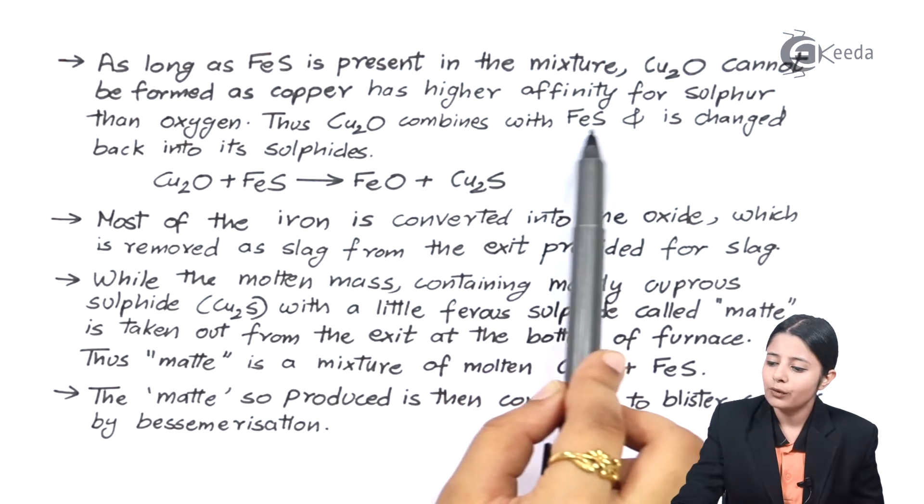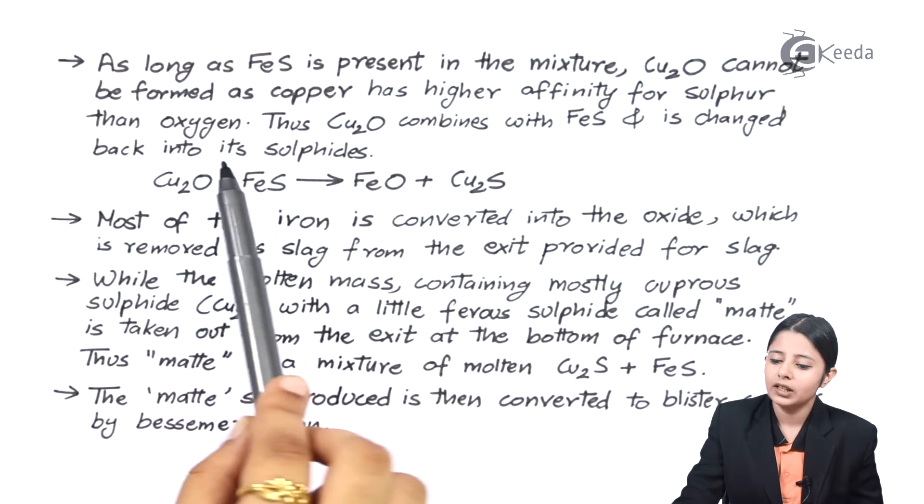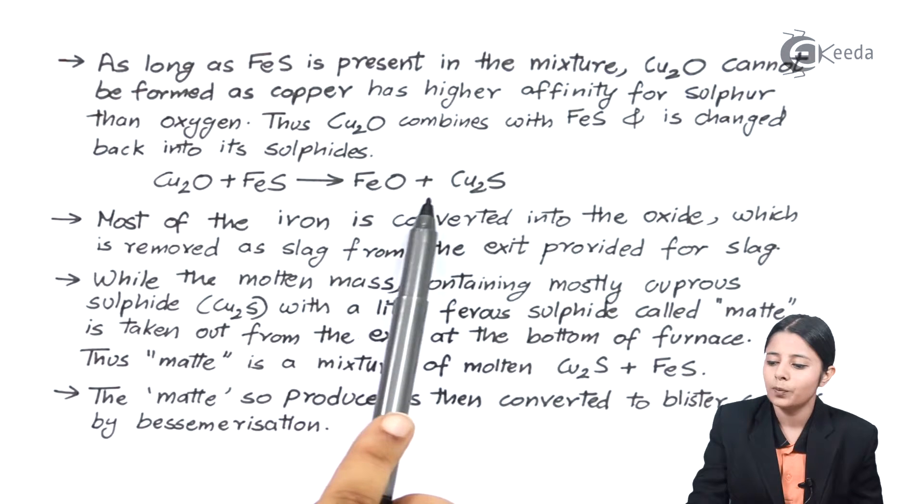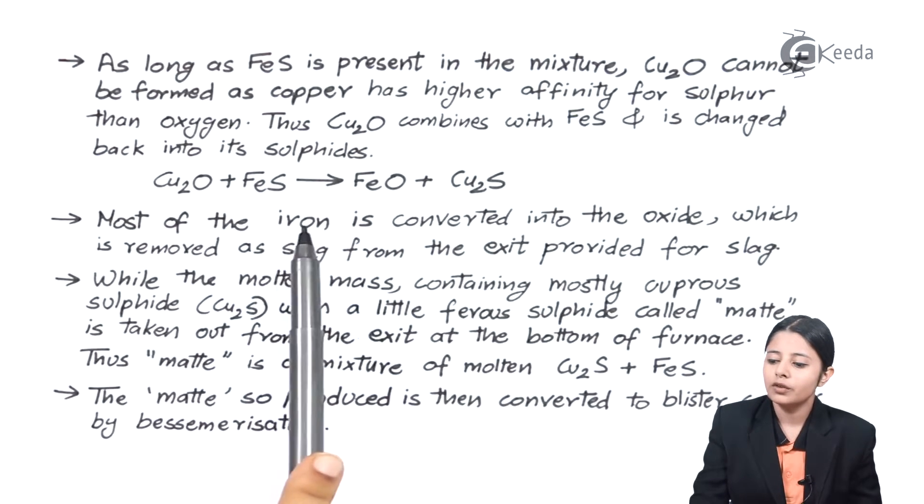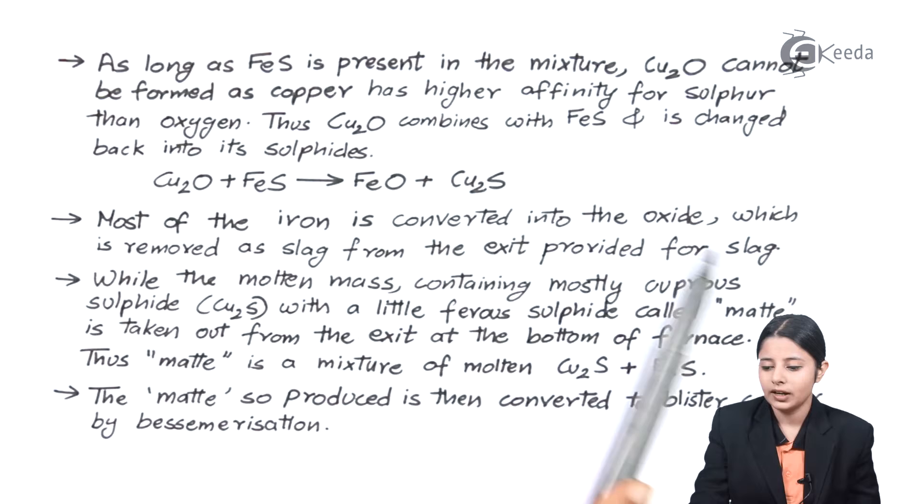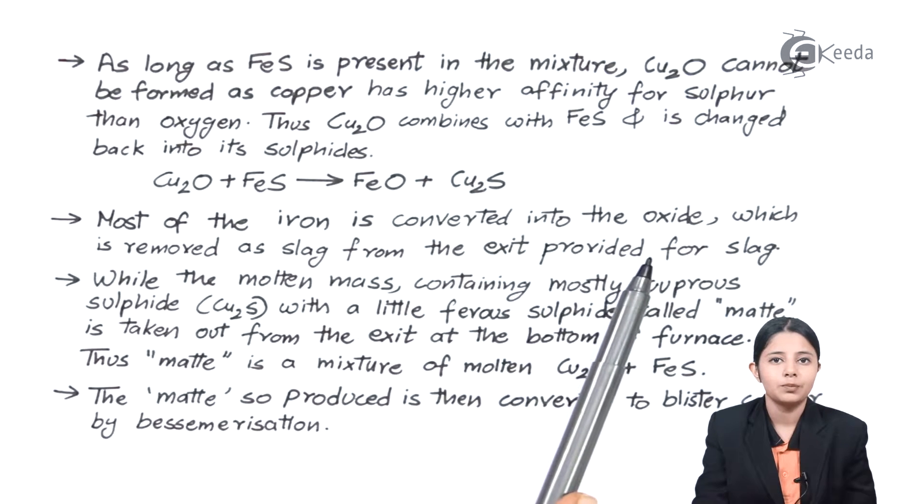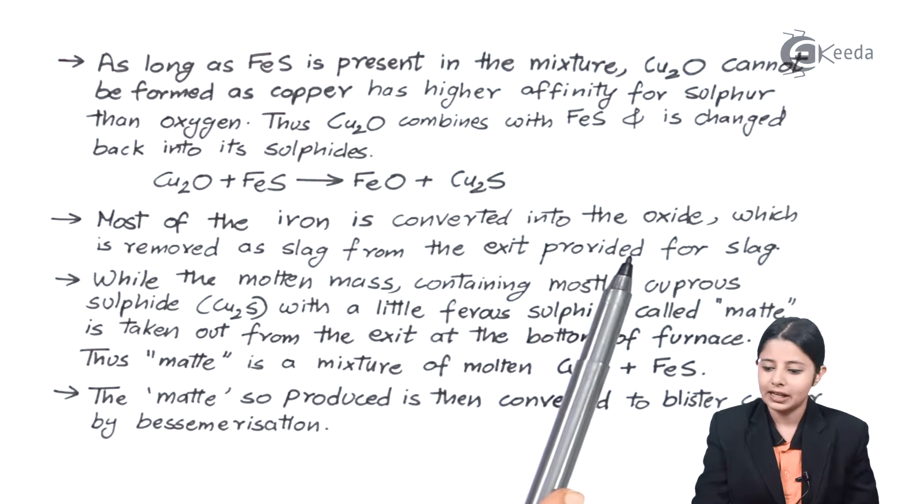Now thus Cu2O combines with FeS and is changed back into its sulphide. So I have Cu2O plus FeS forming FeO plus Cu2S. Most of the iron is converted into its oxide which is removed as slag from the exit provided for slag. We have seen the exit provided from the slag in the diagram.